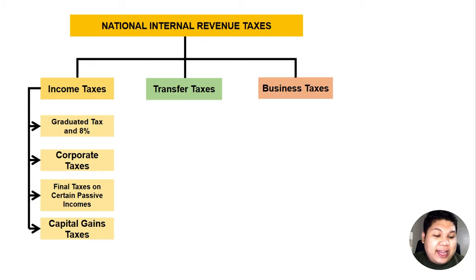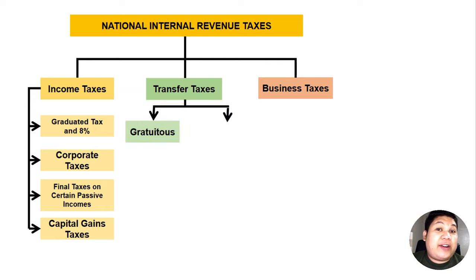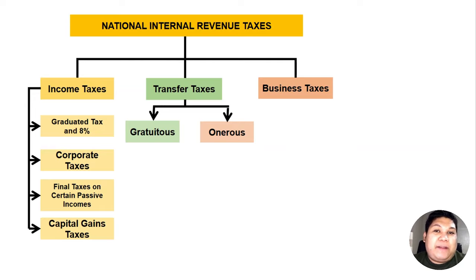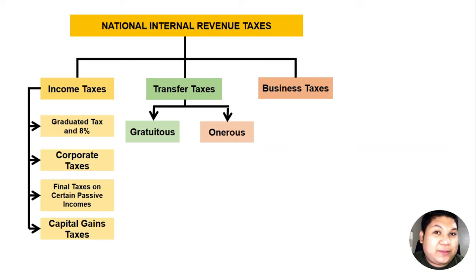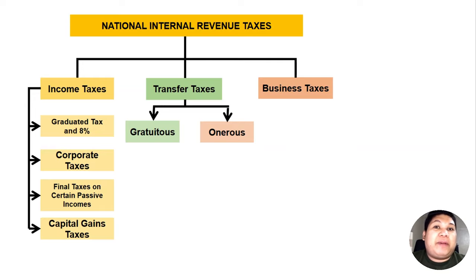Aside from income tax, you can also be subject to transfer taxes. There are two types of transfer taxes depending on whether the transfer is gratuitous or onerous. Gratuitous transfers are transfers of property without remuneration or compensation — given for free. For example, giving a gift is a gratuitous transfer, or when someone dies and leaves estate properties to heirs, the transfer upon death is also gratuitous.